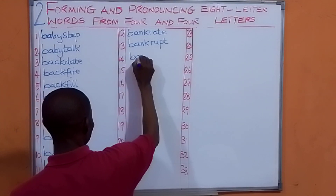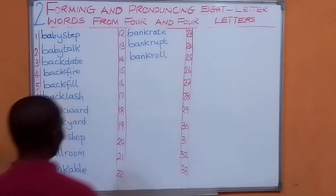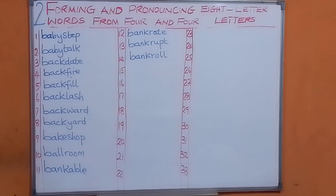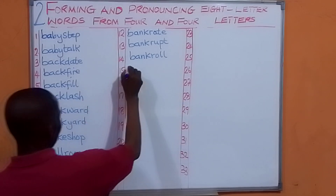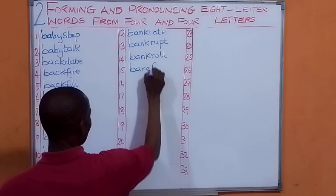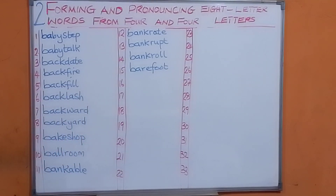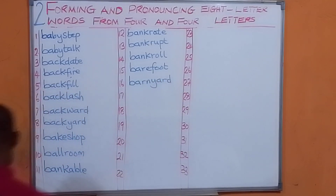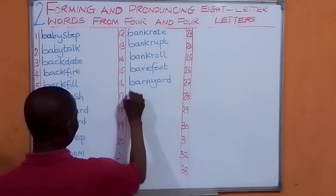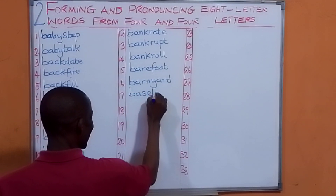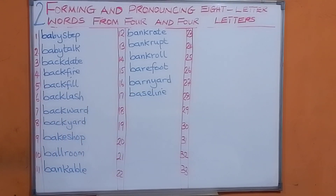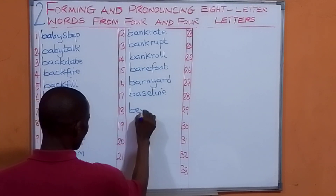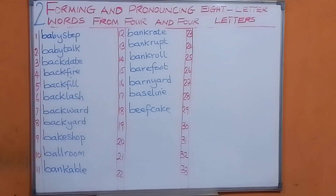Let's have bank and roll. We have bankroll. Let's have bear and foot. We have barefoot. Let's have barn and yard. We have barnyard. Let's have base and lime. We have baseline. Let's have beef and cake. We have beefcake.